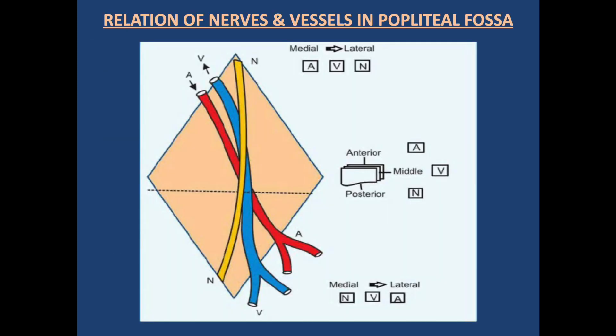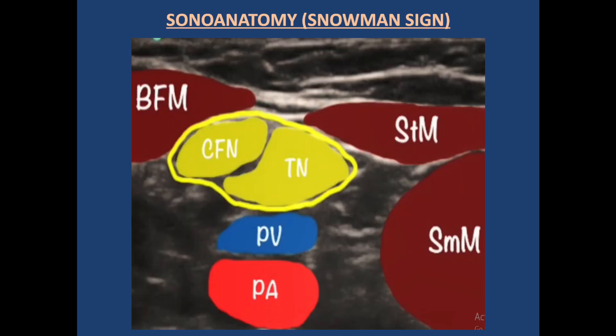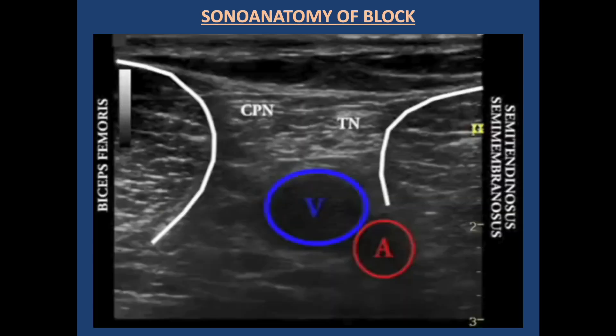This diagram shows the popliteal fossa and the relationship of the sciatic nerve, popliteal vein, and popliteal artery. The sonoanatomy clearly shows the biceps femoris muscle from the lateral side and the semi-tendinosus and semi-membranosus muscles from the medial side. Importantly, in this area the sciatic nerve is subcutaneous and very near the skin. Below this we find the popliteal vein and then the popliteal artery. A subsequent diagram of sonoanatomy clearly shows the common peroneal nerve and tibial nerve, with the popliteal vein below and the pulsatile popliteal artery. The vein is only visible when we decrease the pressure on the probe. The nerve is subcutaneous in this area.